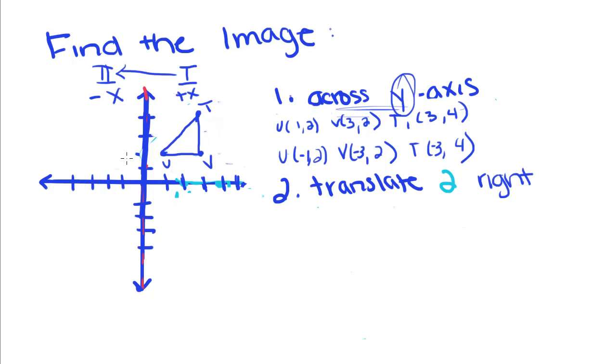So now let's plot this new shape. Negative 1 up 2, negative 3 up 2, and negative 3 up 4. So here is this triangle V, U, reflected across the y-axis.